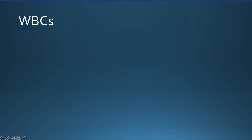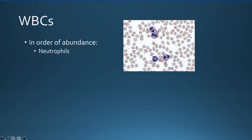We will now discuss the five types of white blood cells in order of their abundance in the bloodstream. Neutrophils are the first white blood cells to arrive at the site of infection or injury. After phagocytosis, they die, forming pus. They are also called polymorphonuclear leukocytes because their nuclei are lobed. When you look at an image of a neutrophil, it looks like it has multiple nuclei, but it is just one nucleus that is pinched in so that it looks like there are multiple nuclei.